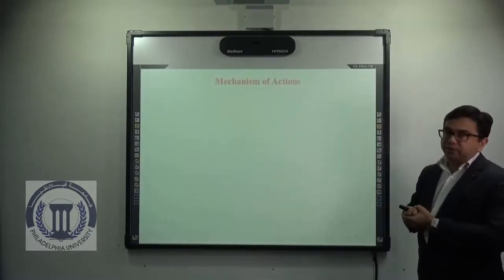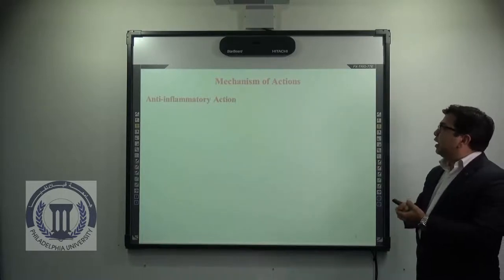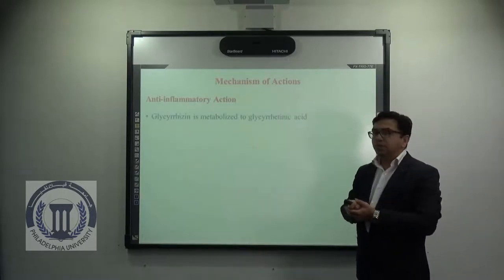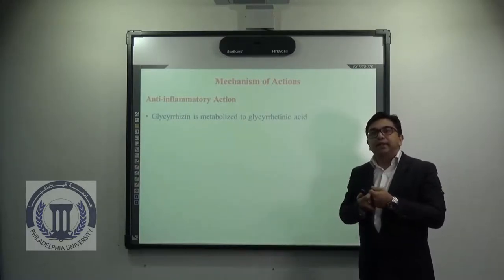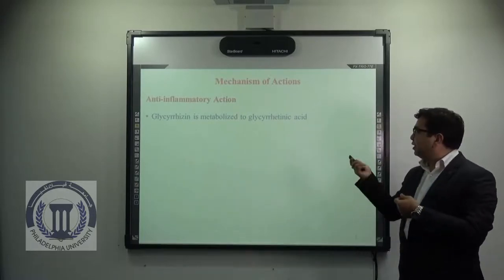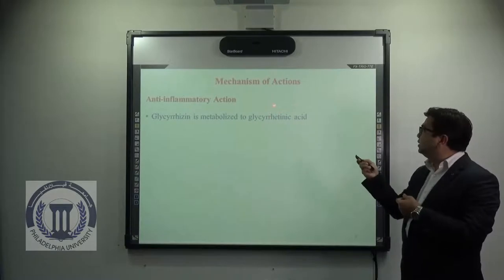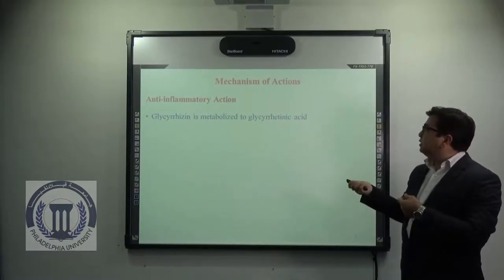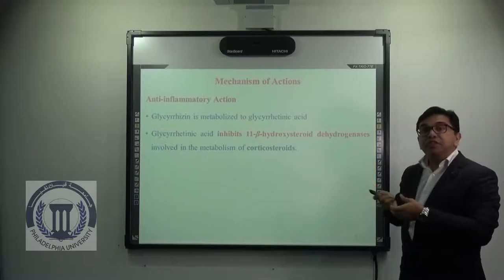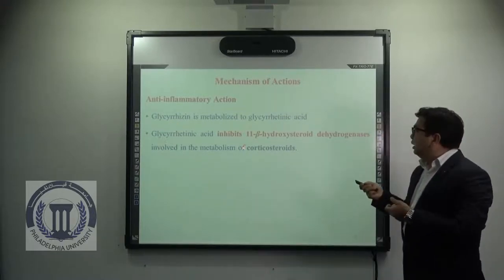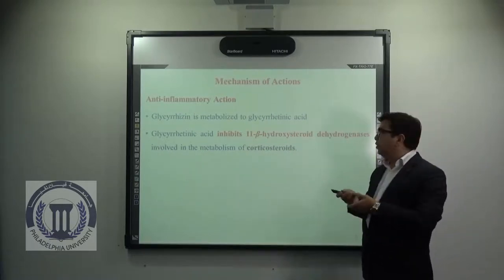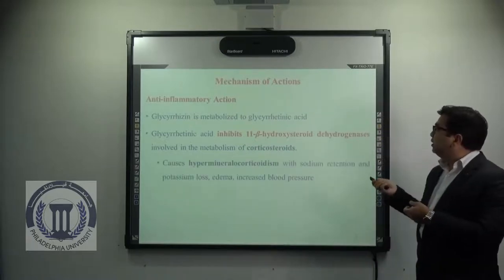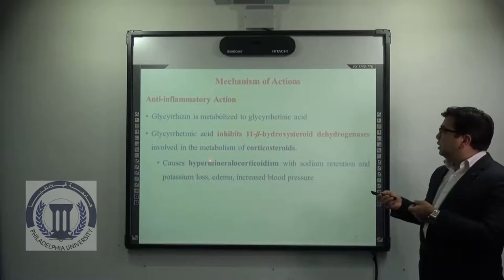Now coming to the mechanism of action, we will discuss the anti-inflammatory mechanism of licorice root extract, mainly glycyrrhizin. Glycyrrhizin is a saponin which, when metabolized, gives rise to glycyrrhetinic acid — the aglycone part of glycyrrhizin. Glycyrrhetinic acid is responsible for the inhibition of 11-beta-hydroxysteroid dehydrogenases, which are mainly involved in the metabolism of corticosteroids. By inhibiting this enzyme, it can cause hypermineralocorticoidism.